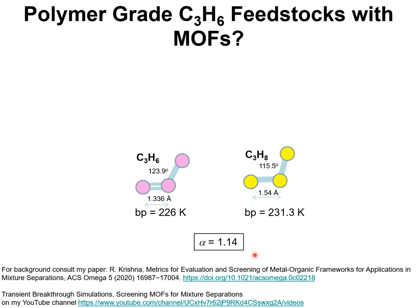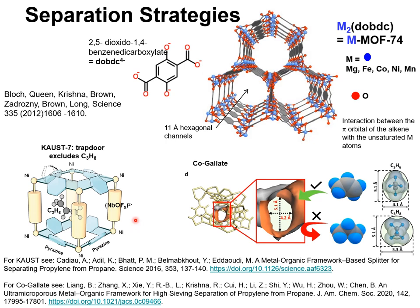We ask ourselves whether metal-organic frameworks can provide energy-efficient alternatives to propylene-propane separations in PSA units. Many MOFs selectively absorb the unsaturated propylene by exploiting pi-bond interactions with open metal sites of M-MOF-74, where M is magnesium, iron, cobalt, nickel, or manganese.